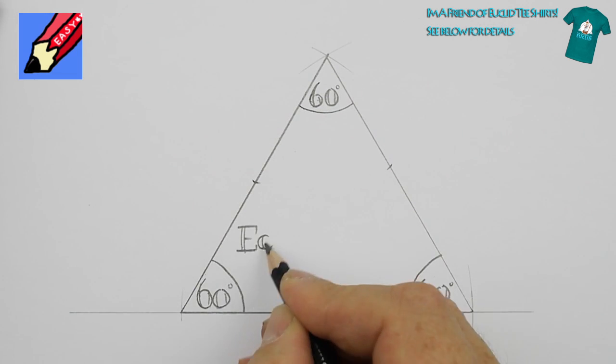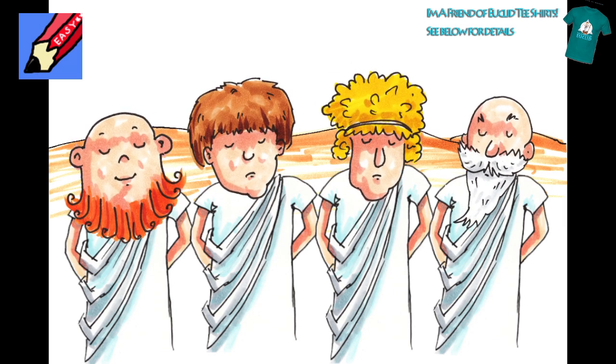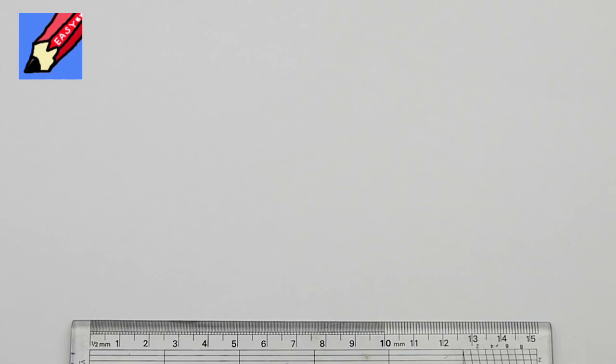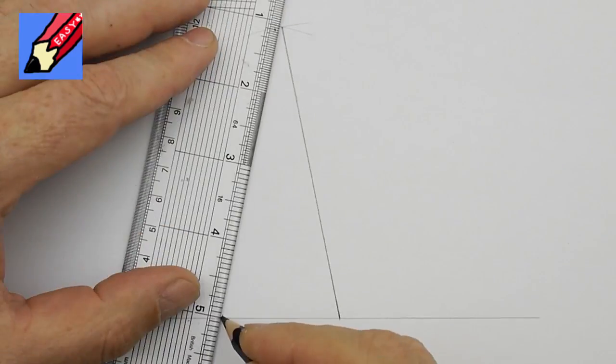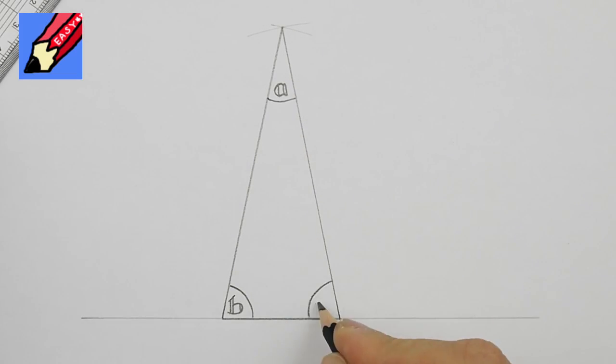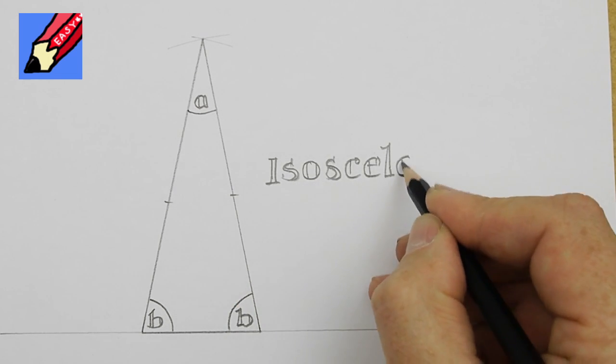Euclid's friends nodded their heads wisely. If we change the length of just one line, we now have two lines of equal length and two angles the same. This we call an isosceles triangle.